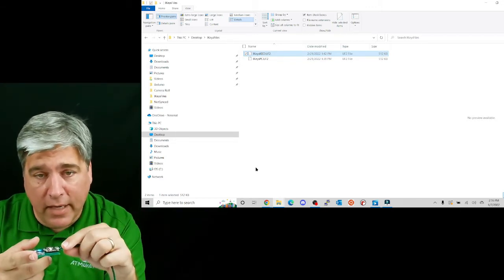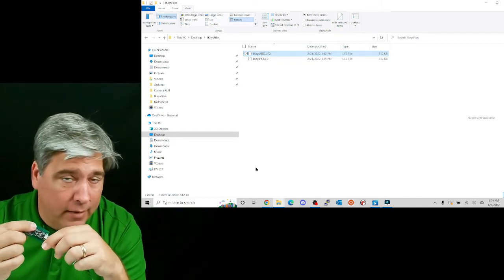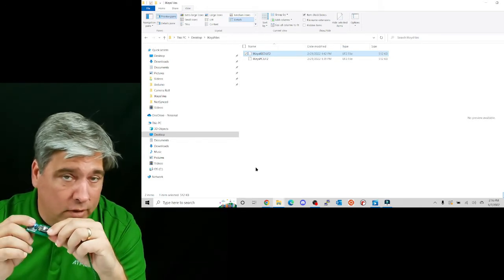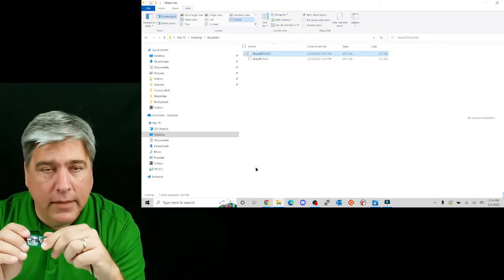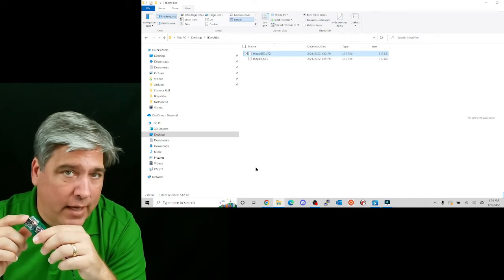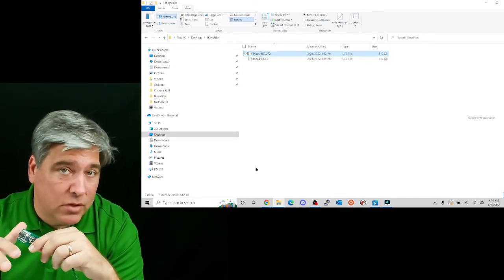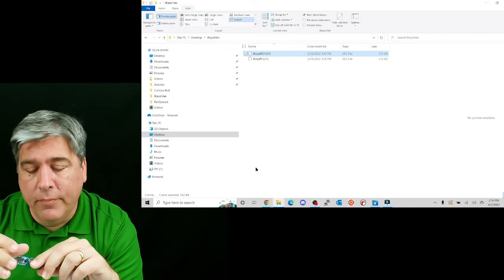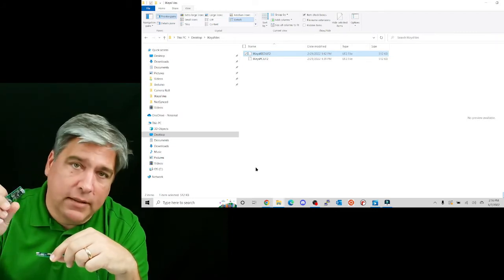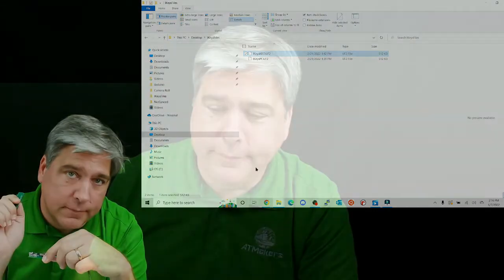When you want to do the other side, you grab the CircuitPython file, the UF2 file, and you copy it over as well. Now, on the QtPis, we may have to have a second step there to copy some additional files over. But if you're just doing the Trinkets, that's all there is to this.